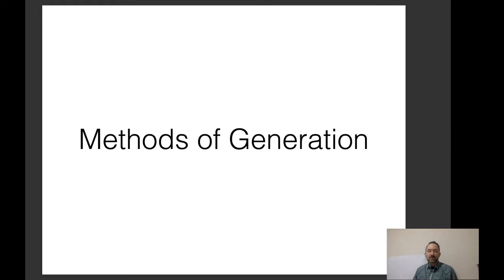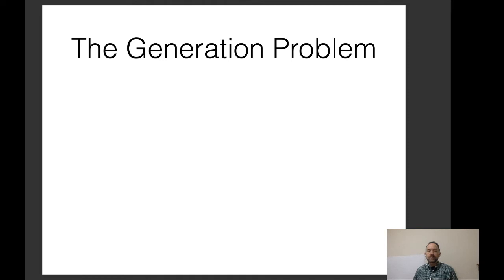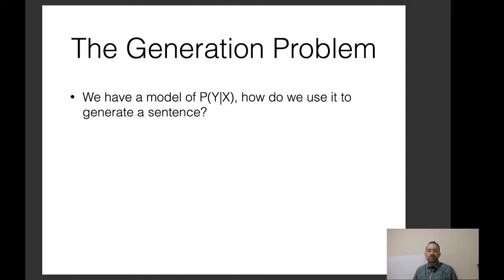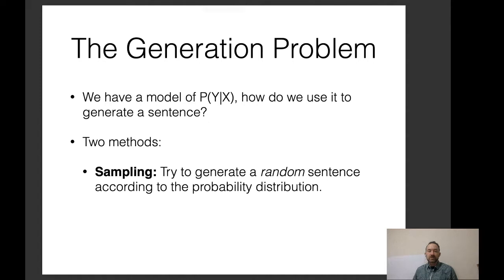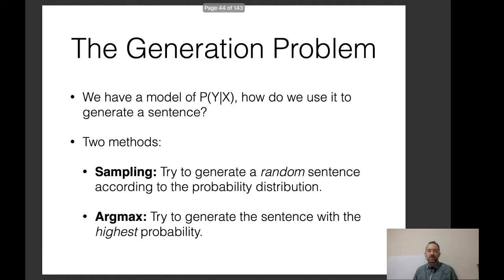However, once we've created a model to calculate these probabilities, how do we actually generate the output? That's what we'll get to next. The generation problem is: we have a model of P(Y|X) — how do we use it to generate a sentence? There are essentially two methods: sampling, where we generate a random sentence according to the probability distribution, and argmax, where we generate the sentence with the highest probability.